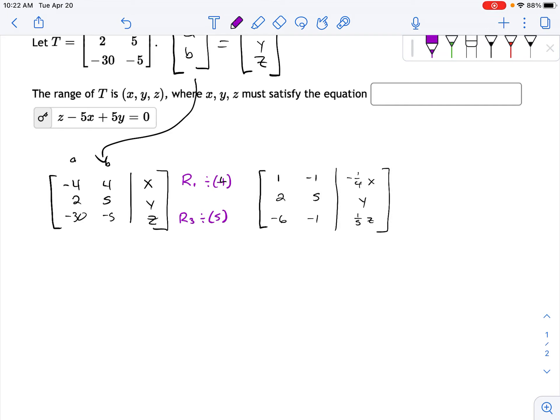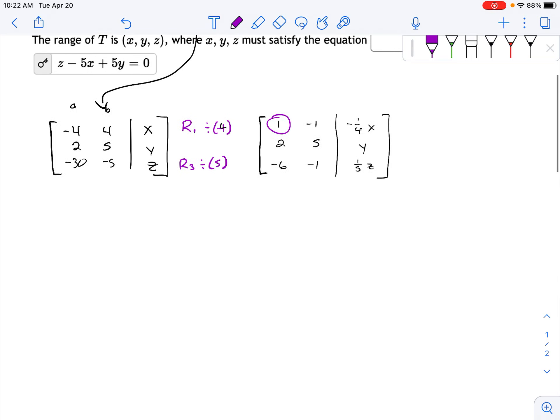All right, now let's use this as a pivot and zero out the two and the six. So we're going to do row two minus twice row one, and row three plus six row one. All right, so row one doesn't change.